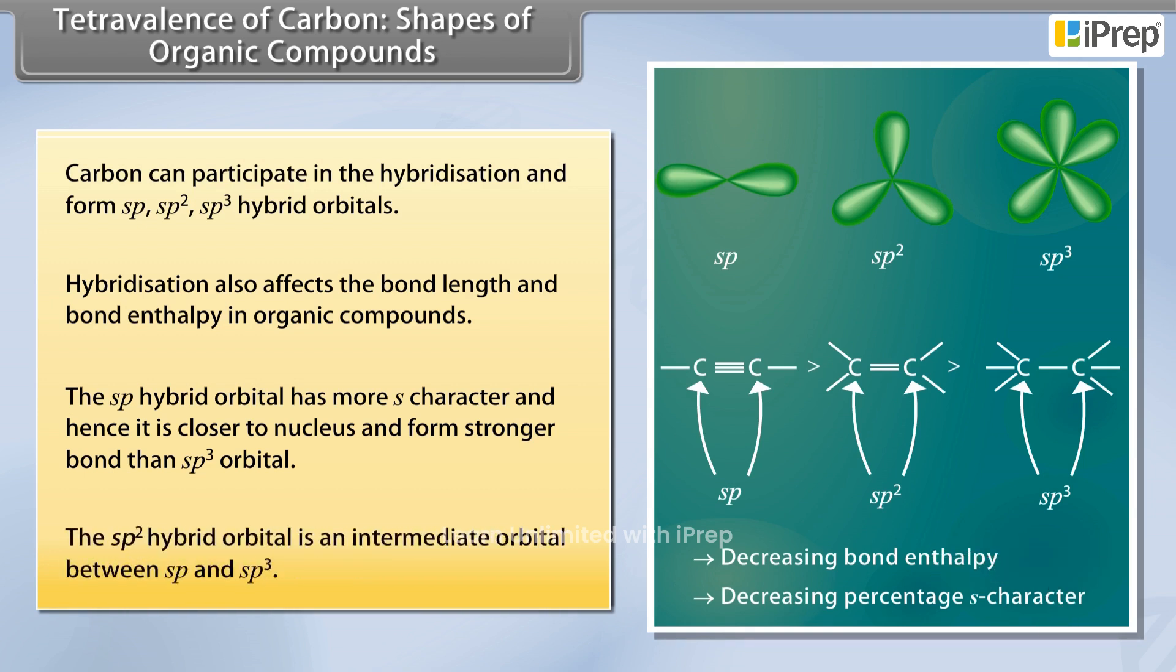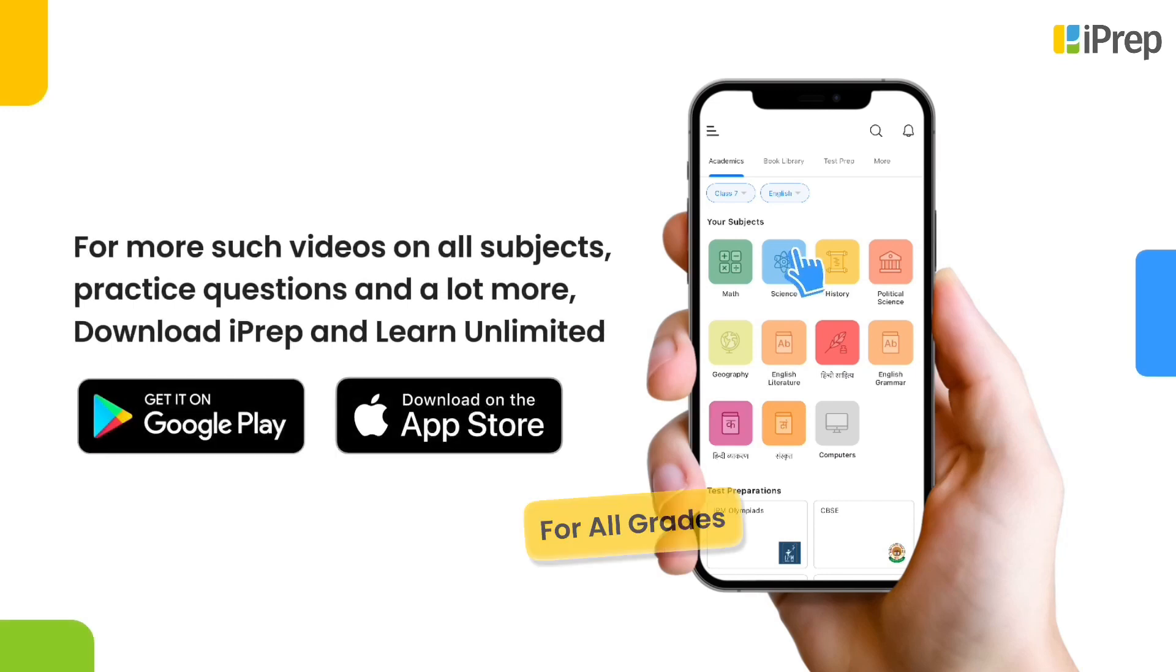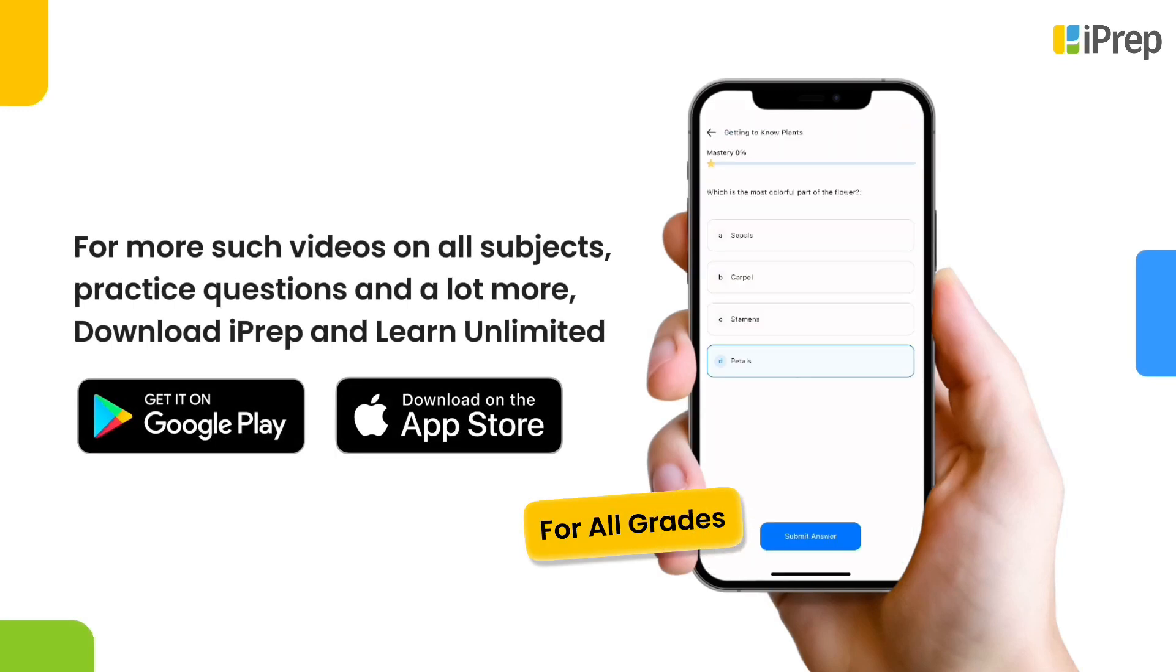The sp2 hybrid orbital is an intermediate orbital between sp and sp3. For more such videos on all subjects, practice questions and a lot more, download iPrep and learn unlimited.